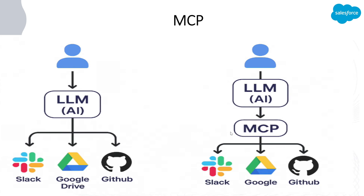That is where MCP comes into picture. These applications — Slack, Google, GitHub, Salesforce, Box.com, or PayPal — through MCP will give you access to different tools that you can use. For example, PayPal will give you a tool to create an invoice in the PayPal system, Salesforce will give you a tool to query data from Salesforce or deploy a component into Salesforce, and Slack will give you a tool to send a message to the Slack system.